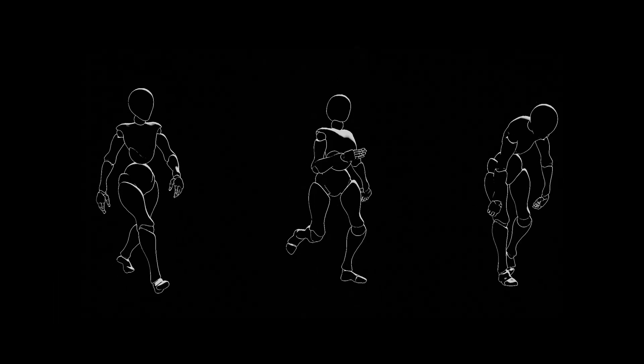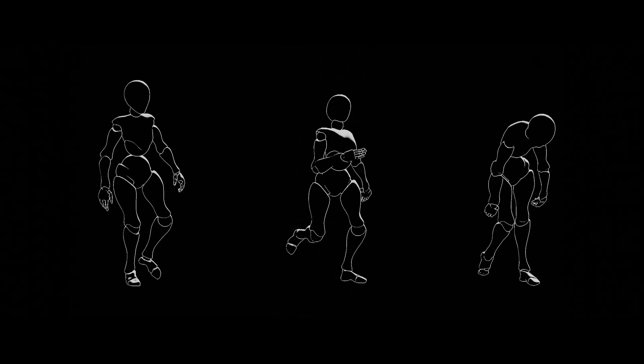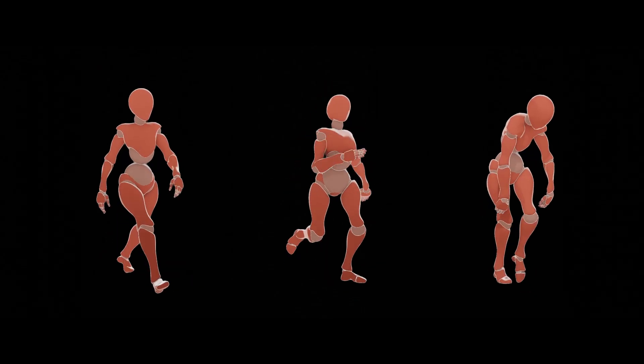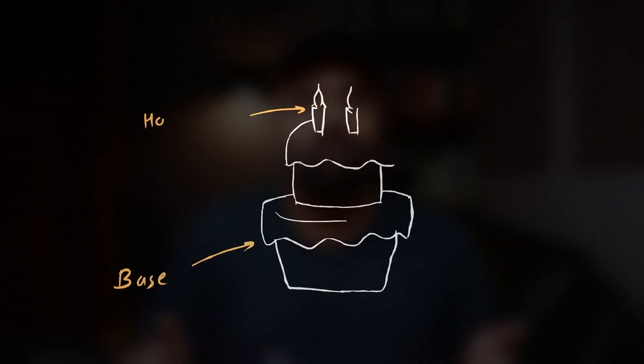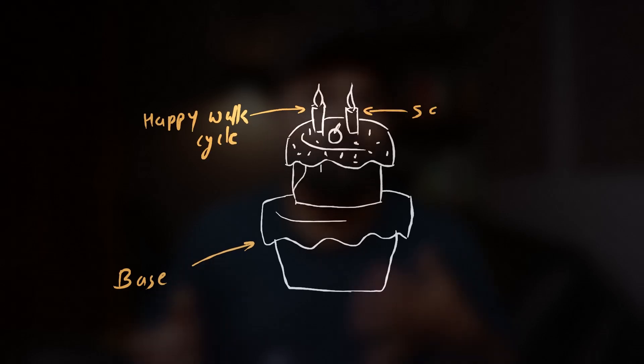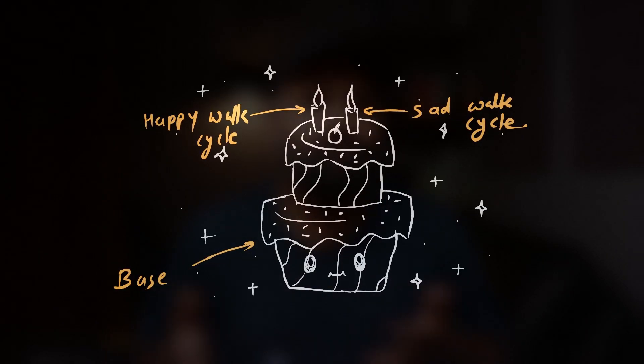Every person has a different walk cycle — the way they walk shows their personality. If I'm happy I'll walk like this; if I'm sad I'll walk like this. But before making those kinds of walks, we have to understand how a neutral — or generic — walk cycle works. In this video we're going to create a generic walk cycle, which is the base of all other walk cycles, and on top of that we can create happy and sad walk cycles without any issue.